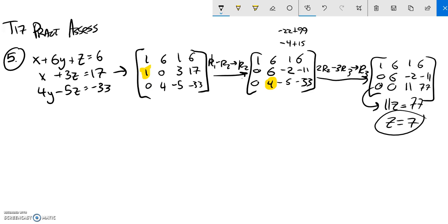So if I know that Z is 7, I can plug it into this equation to figure out what Y is. Because it's 6Y minus 2Z. Z is 7. Is negative 11. So 6Y minus 14 equals negative 11. Add 14 to both sides. 6Y is 3 divided by 6. Y is 1 half.